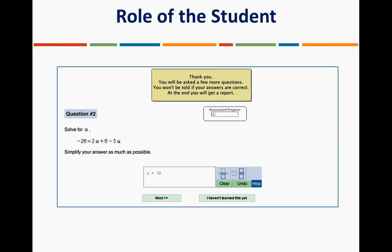That button is there for when students reach a part of their initial assessment they don't know how to do — they haven't learned it and don't know the prerequisites. We don't want to frustrate them with content they're not ready for. When they click it, the initial assessment readapts to them so the next question can place them accurately. They should only click it when they really need to. Also, the calculator in ALEKS is intelligent — students won't be allowed to use it unless it's appropriate for the question they're working on, so let them know to only use the calculator when it's available.